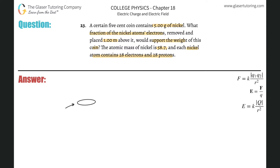We know this coin has a mass of 5 grams, or 5.00 grams. We need that in kilograms, so this is just 5 times 10 to the minus 3 kilograms. Let's keep that in mind.